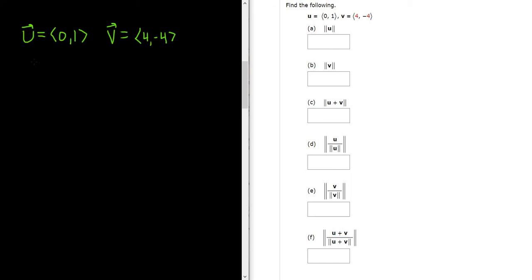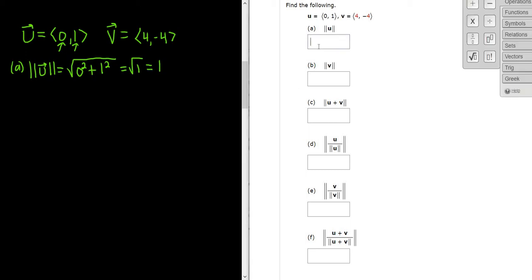The first part wants us to find the magnitude of u. So the magnitude of the vector u, to find the magnitude, you basically take the square root and then you square each of the components and you add them up. So it'll be 0 squared plus 1 squared. So 0 plus 1 is 1, so we get the square root of 1, so we just get 1. The answer here to the first part is 1.